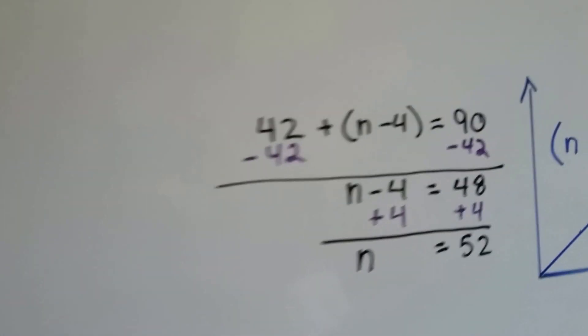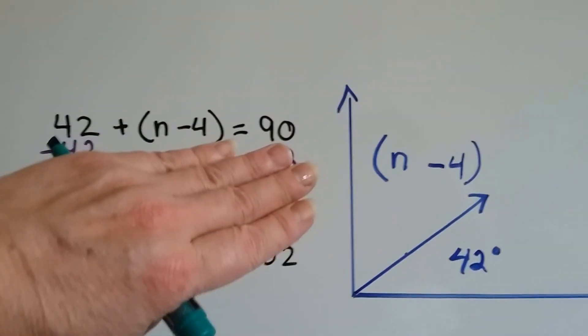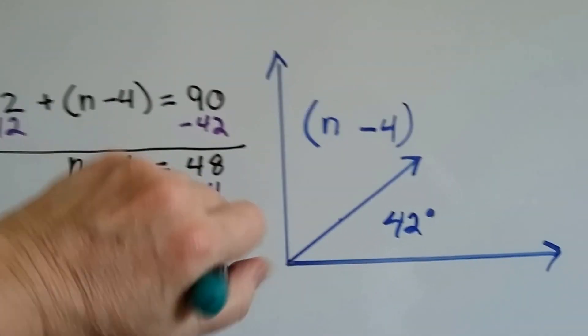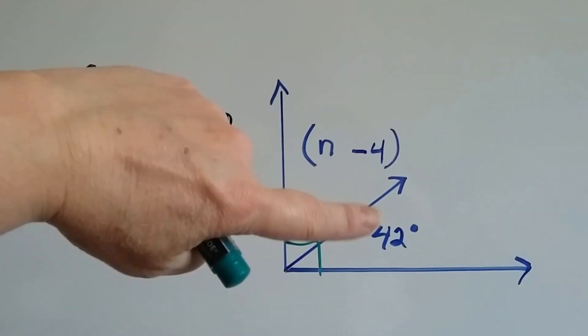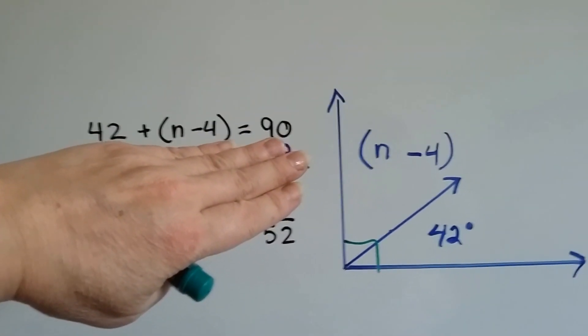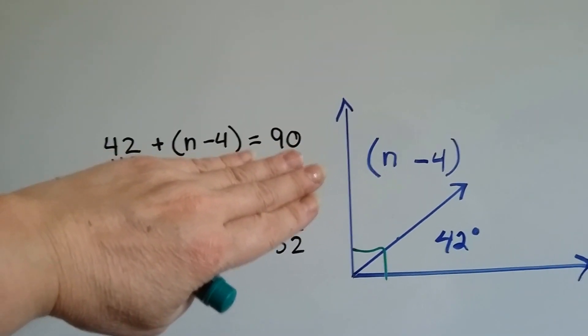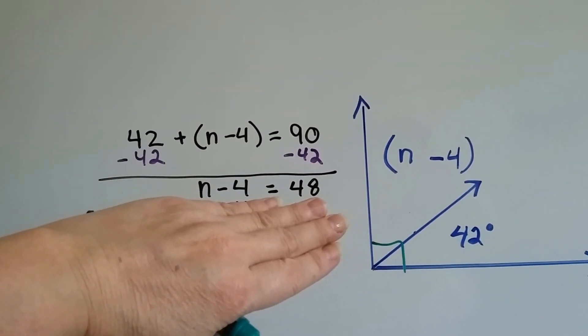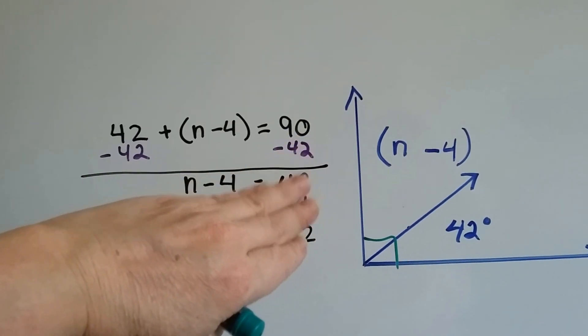Let's do another one. We've got 42 plus n minus 4 equals 90 because we've got another 90 degree angle. Let's draw our box. We know it's 90 degrees. And we're given n minus 4 and a 42. So we know that we've got a 42 plus the n minus 4 is going to equal 90. So the first thing we do is we take the 42 off of each side.